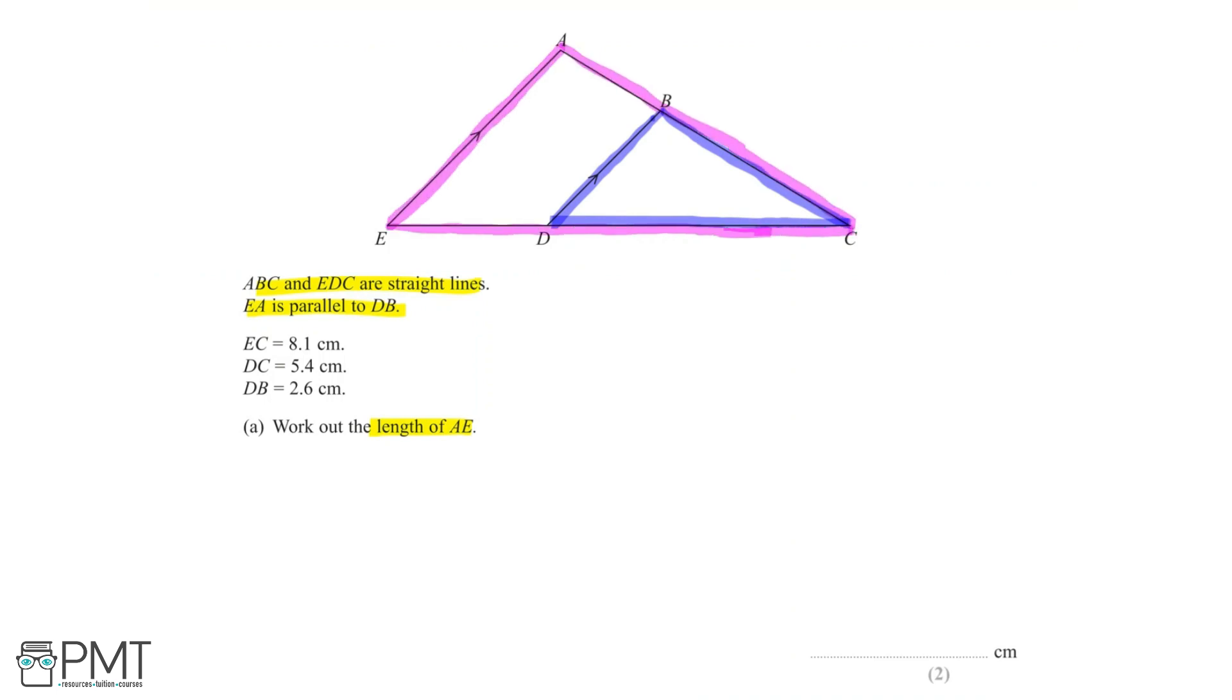Now we can label our diagram with the dimensions given to us in the question. So we're told that line EC is equal to 8.1cm, line DC is 5.4cm, and lastly, line DB is equal to 2.6cm.